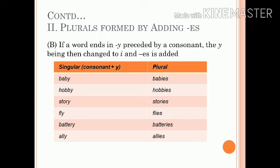If a word ends in Y preceded by a consonant, the Y is then changed to I and ES is added. For example: babies, hobbies, stories, flies, batteries, allies, etc.